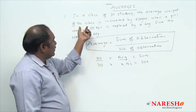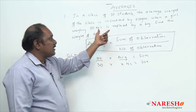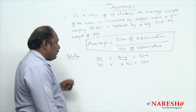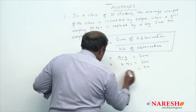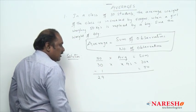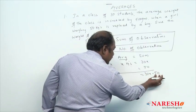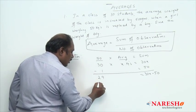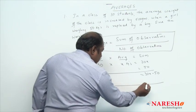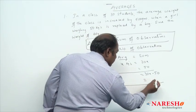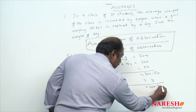The average weight of the class is increased by 500 grams — half kg — when a girl weighing 50 kg is replaced by a boy. It means the girl left the class. Subtracting that person whose weight is 50 kg, we now have 29 members and the total weight of these 29 members is 30x minus 50. Then a boy joined, so the total strength becomes 30 again. If the weight of the boy is y kilograms, the total weight of these 30 students is 30x minus 50 plus y.